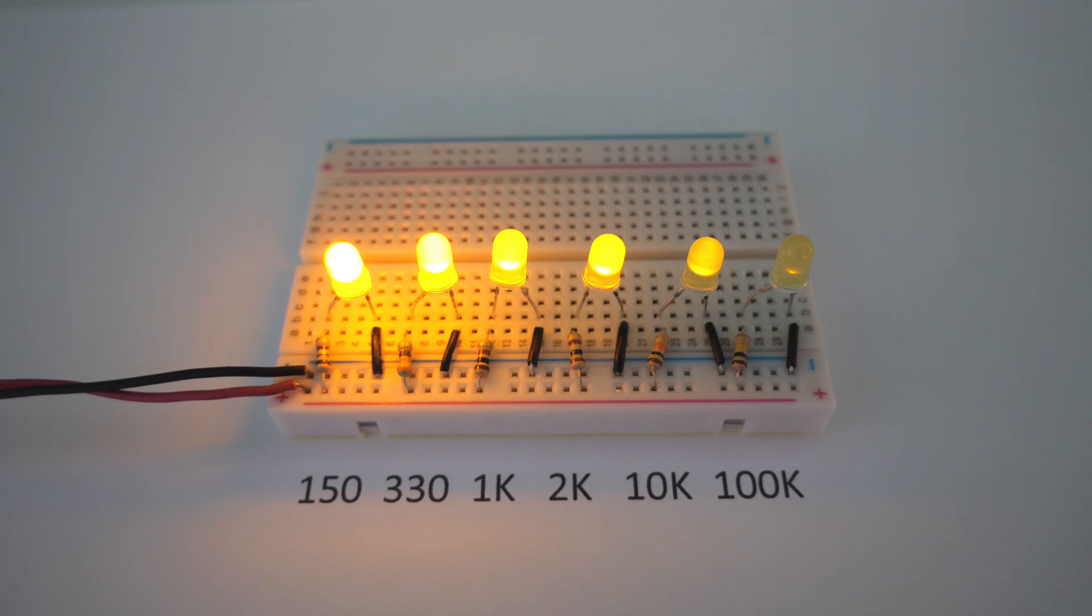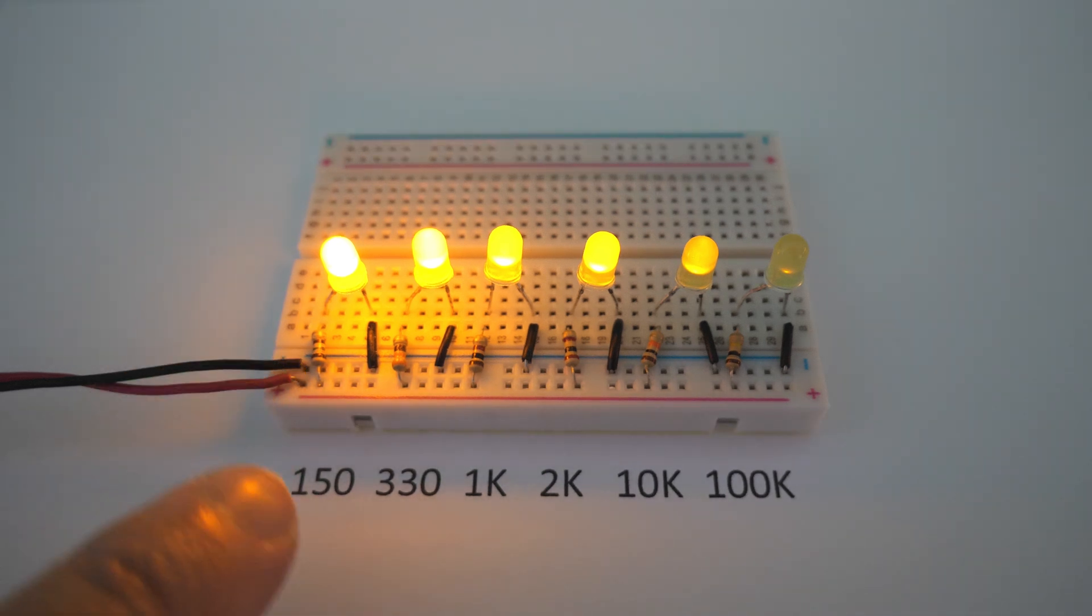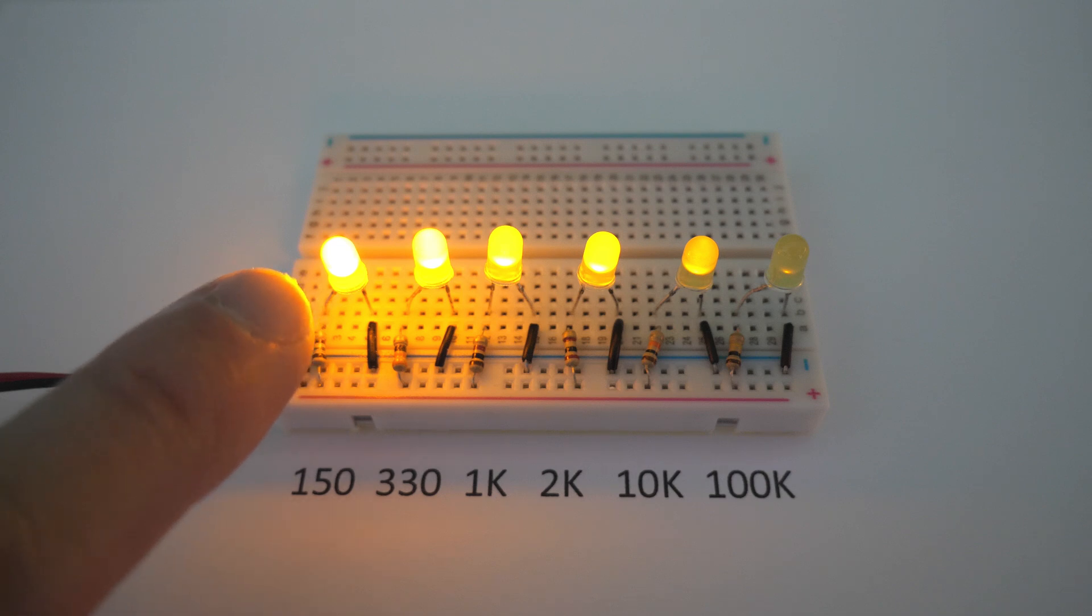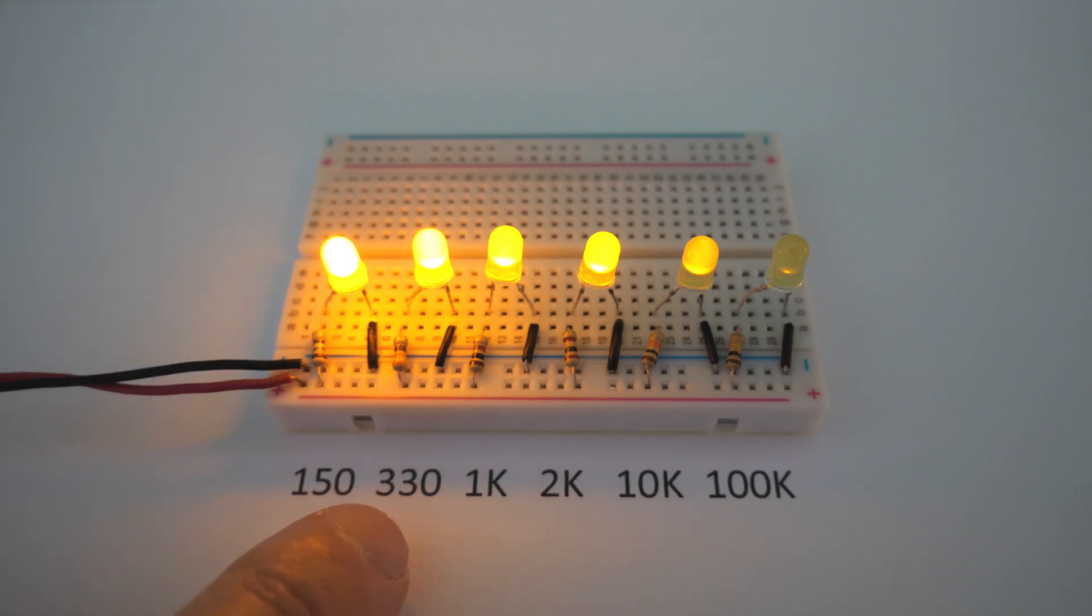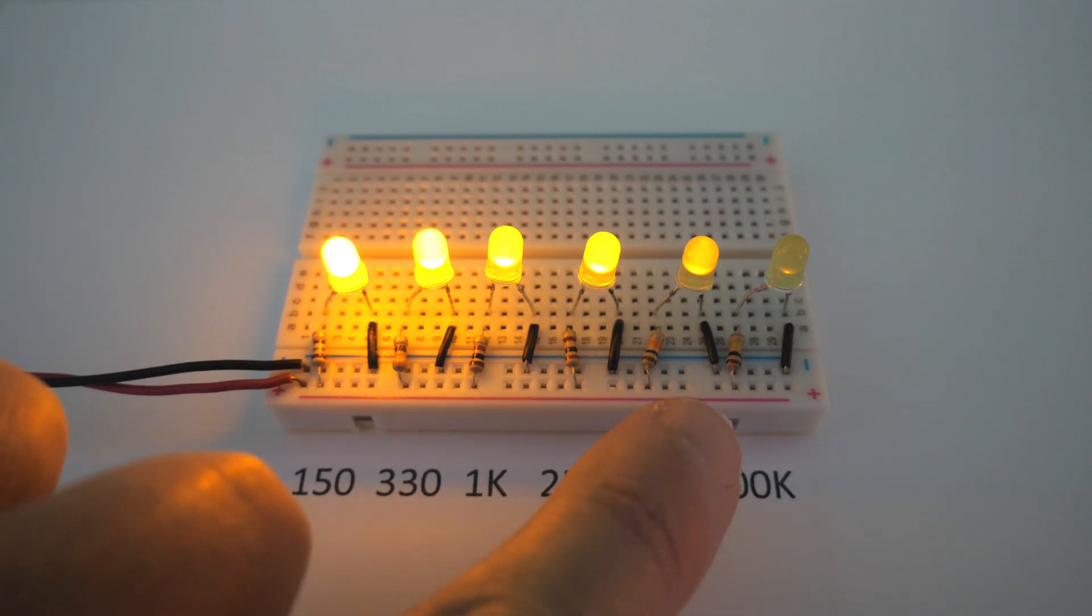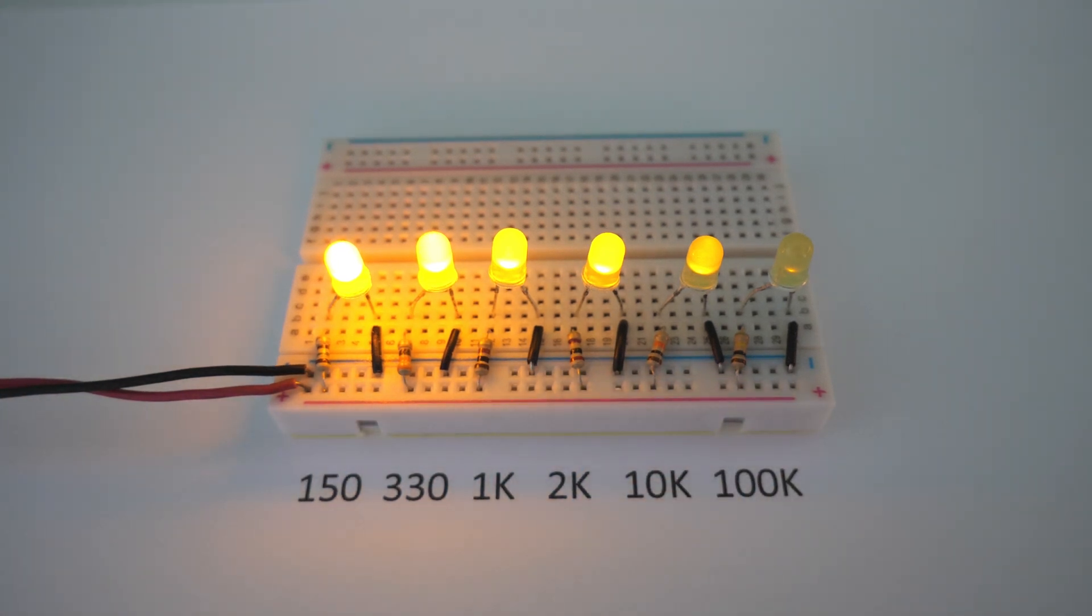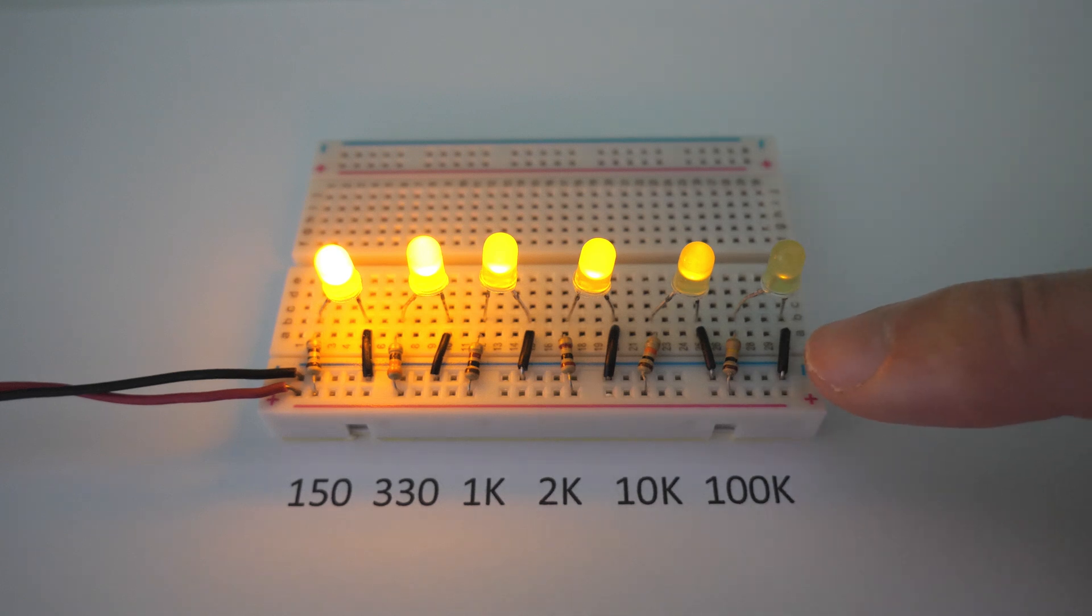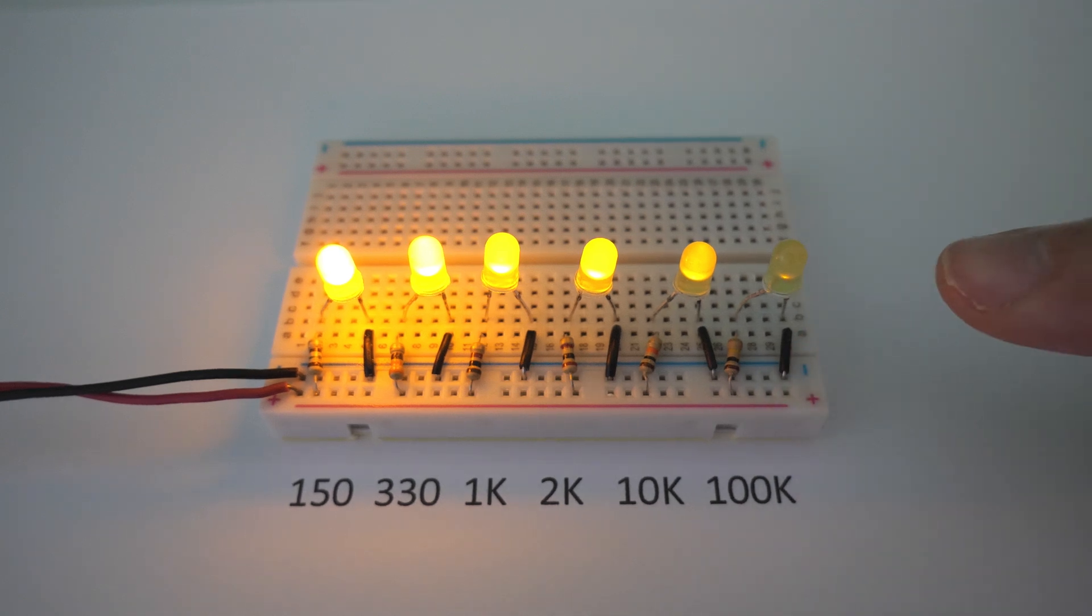Here we can see that the LEDs are very different brightnesses depending on the value of the current limiting resistor. This resistor right here is 150 ohm, and you can see that the LED is super bright. This LED is 330 ohm. This one is 1K, 2K, 10K, and 100K. And you can see that even with this 100K current limiting resistor, we actually still have a partially lit LED. Sure, it's super dim, but it is still lit.